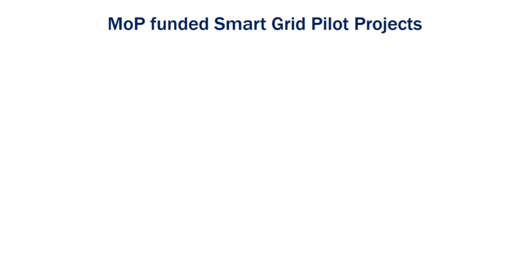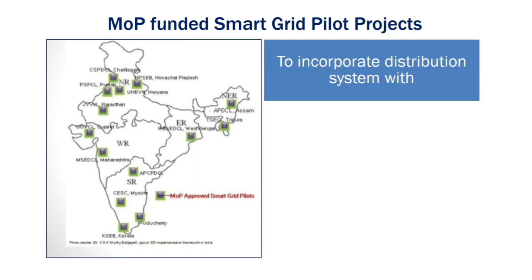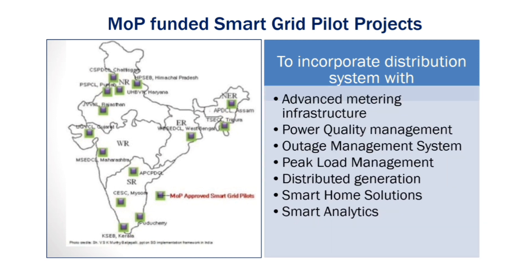Various Ministry of Power funded projects in smart grid are available in India — about 14 projects, with their locations shown on a map. The objective of these MOP funded smart grid pilot projects is to incorporate the distribution system with advanced metering infrastructure, power quality management, outage management systems, peak load management, distributed generation, smart home solutions, and smart analytics.